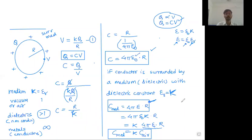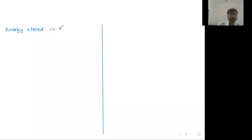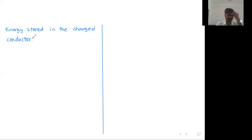Now write down the next heading: energy stored in the charged conductor. These are simple, small points - about five minutes. We just have to write them down and derive the formula.